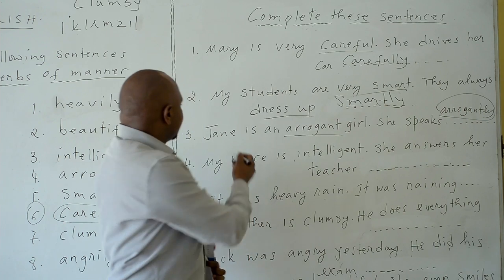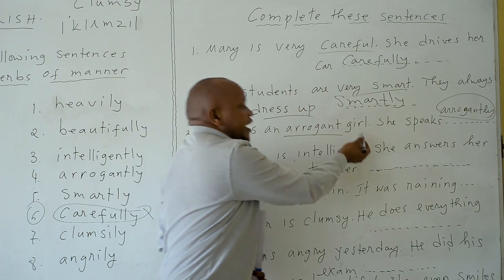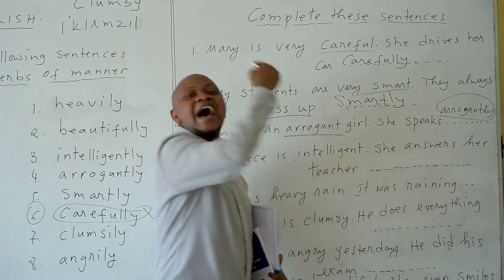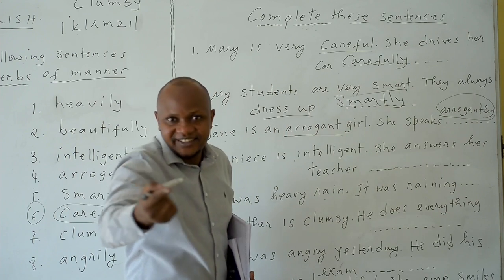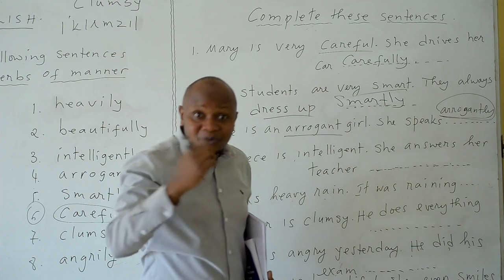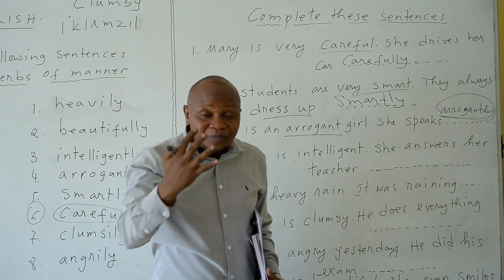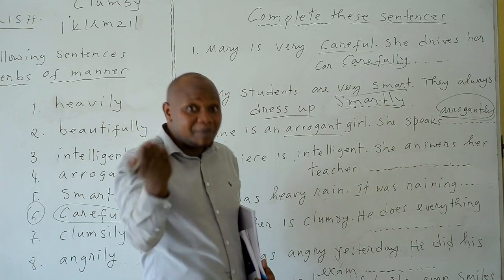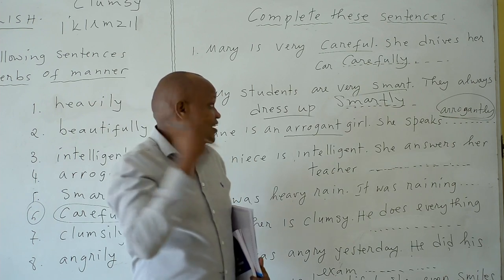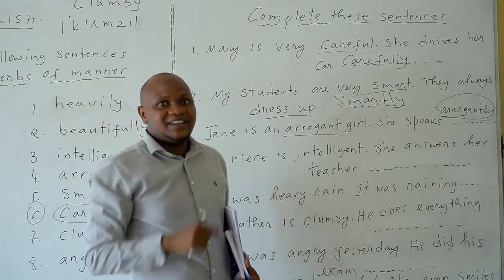The third sentence: 'Jane is an arrogant girl. She speaks arrogantly.' Because Jane is arrogant, she speaks arrogantly.